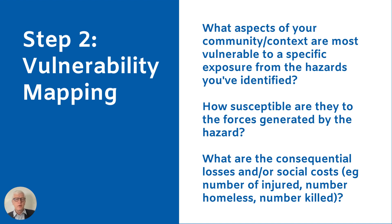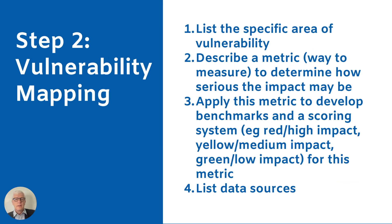Once you've compiled your hazard map, you can look at each hazard and see how vulnerable your community would be. This means looking at what aspects of your community are most vulnerable to a specific exposure from the identified hazards, how susceptible they are to the forces generated by those hazards, and what the consequential losses or social costs could be. You can then list the specific areas of vulnerability, apply a metric to determine what constitutes a serious vulnerability, and score it accordingly.